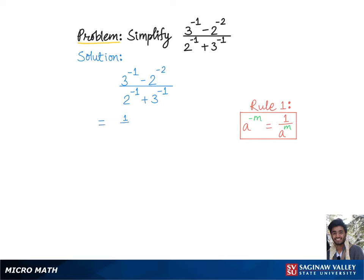According to which we will get 1 over 3 minus 1 over 2 squared is 4, divided by 1 over 2 plus 1 over 3.